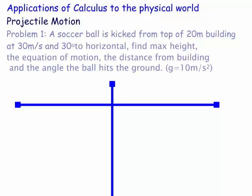A soccer ball is kicked from the top of a 20-metre high building at 30 metres per second and 30 degrees to the horizontal — that's the angle alpha. We need to find the maximum height, the equation of motion, the distance from the building, and the angle the ball hits the ground. We'll go through each part separately, but first I'll set up the equations of motion.